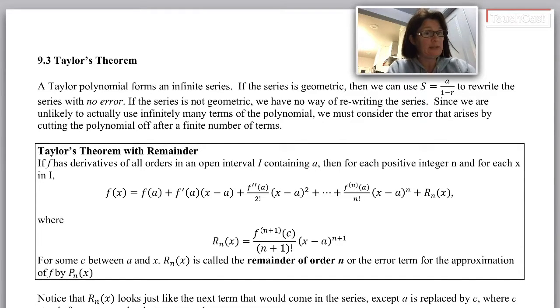A Taylor series is an infinite series. If it's also a geometric series, then we can use the formula S = a/(1-r) to rewrite the series with no error. If it's not a geometric series, we don't have a way of rewriting it.